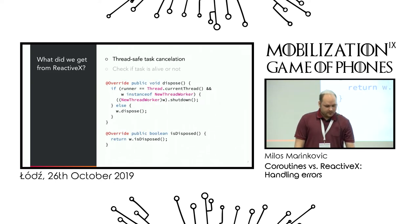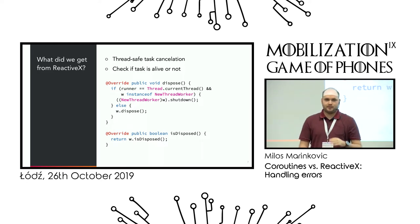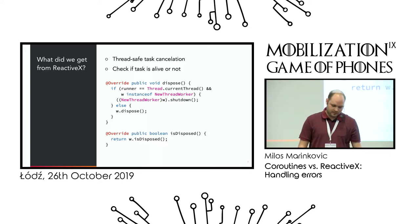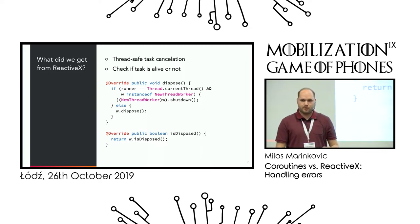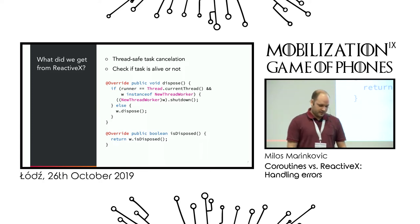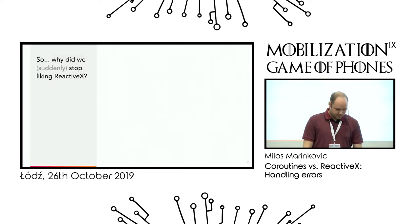Finally, maybe one of the most important things: we would have thread-safe task cancellation. You would just call dispose — or previously unsubscribe — and it's thread safe. You can do it from anywhere. It basically guarantees that your result, whether it's success or error, will not get delivered. So that's pretty much why we liked Rx.